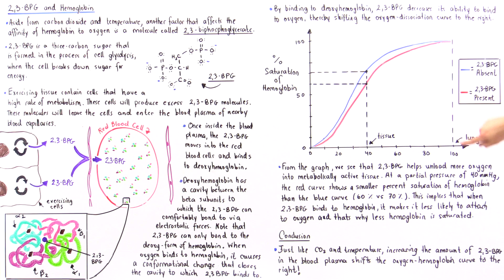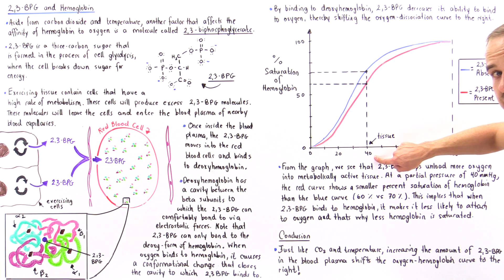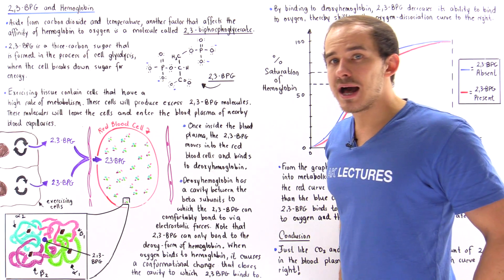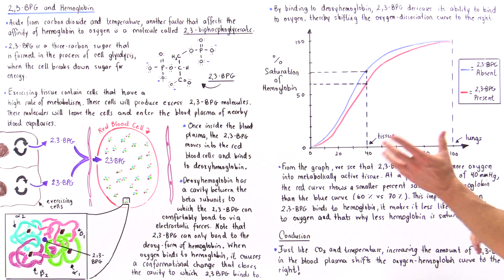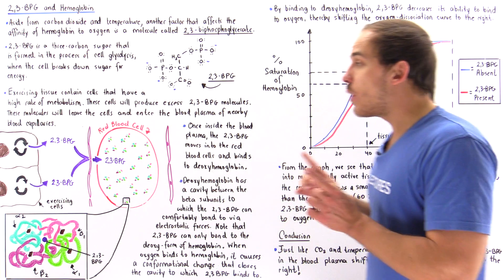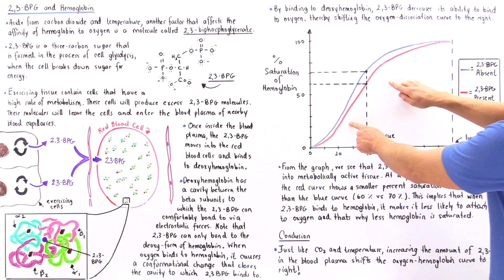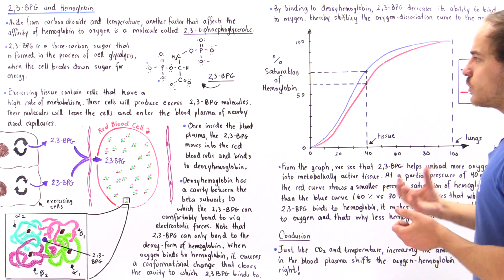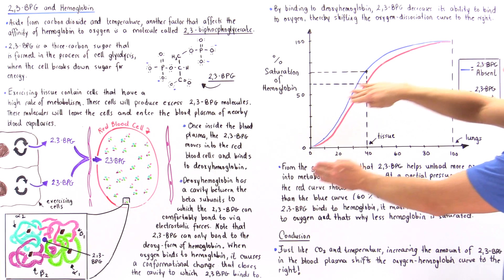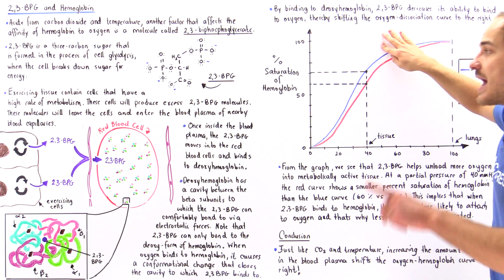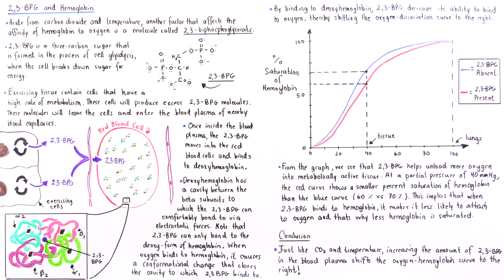A partial pressure of 100 mmHg corresponds to the lungs, and 40 mmHg corresponds to the tissue. The blue curve describes the relationship without 2,3-BPG, while the red curve describes it when 2,3-BPG is present. The red curve is visibly shifted to the right of the blue curve.